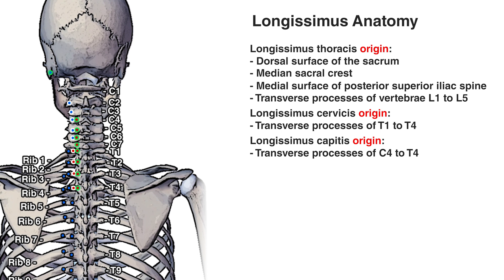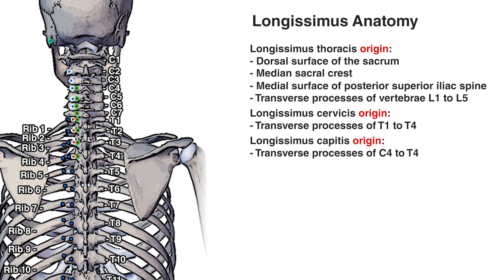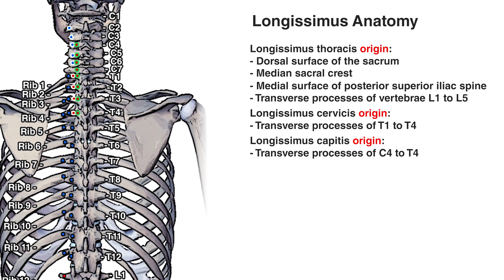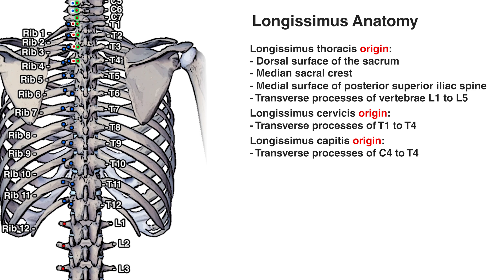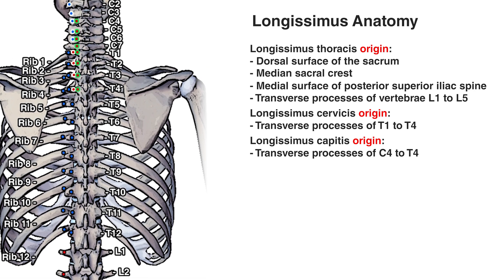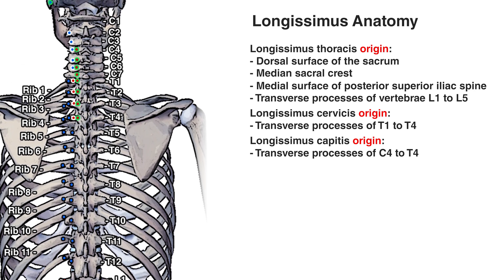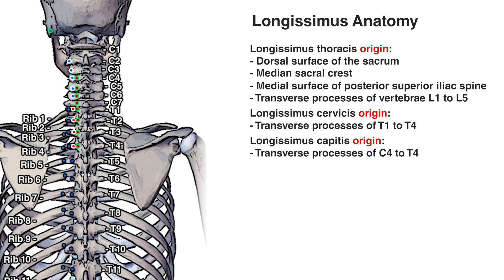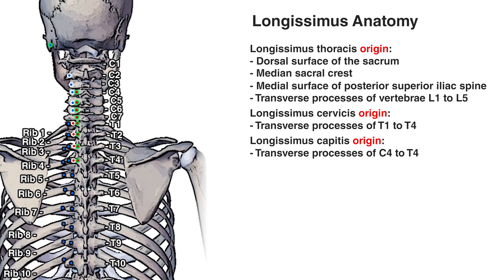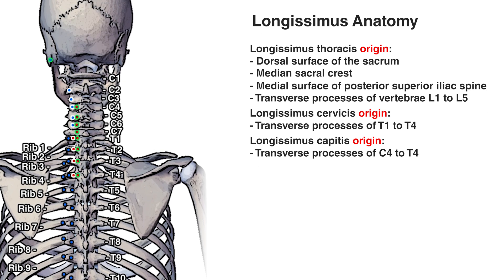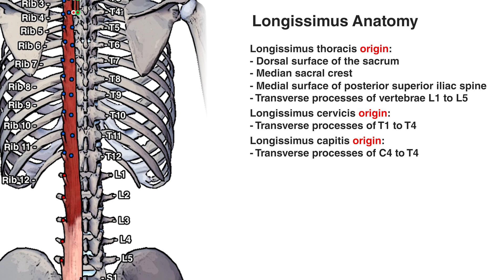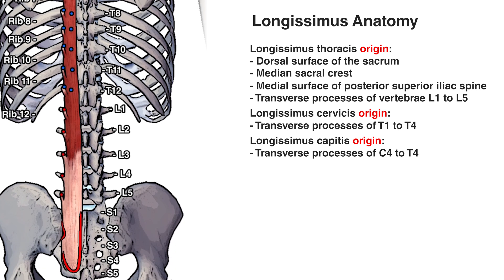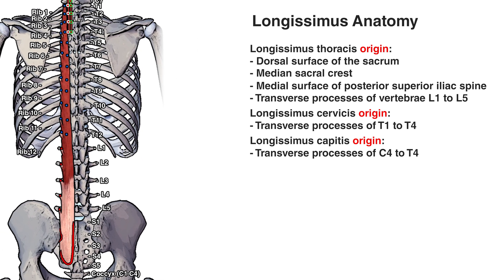Now to finish off the origin and insertions, the insertion points are shown in blue, colour-coded similarly to the origin points: black outline for longissimus thoracis, white outline for longissimus cervicis, and green outline for longissimus capitis. Here are those origin and insertion points shown on top of the different sections of the muscle.